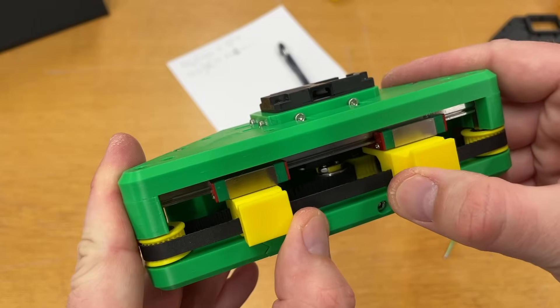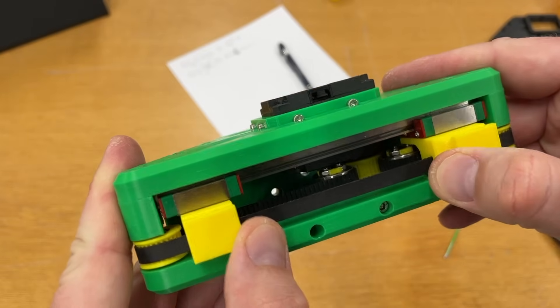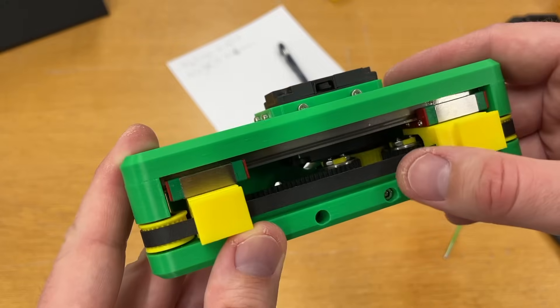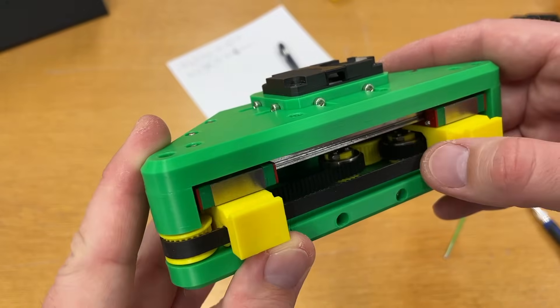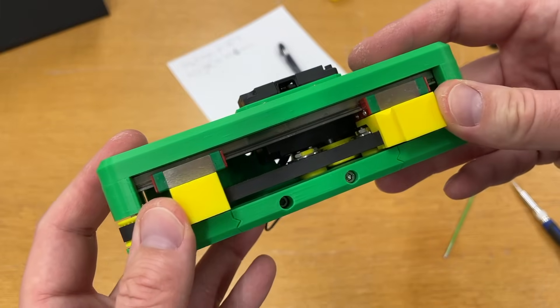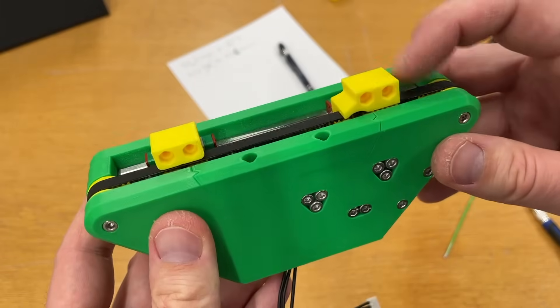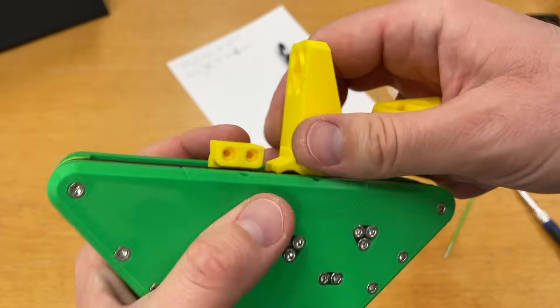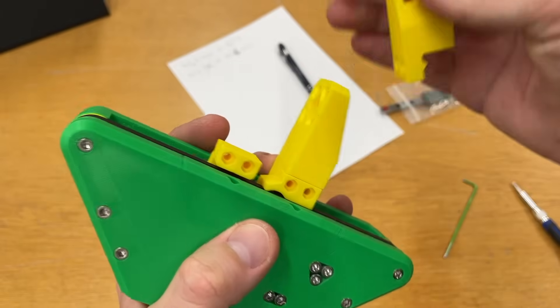So you see how the belt goes over there over the motor pulley, the second pulley. Afterwards the top part of the belt is fixed to this finger and the bottom part of the belt fixed to this finger. The rest of the fingers is these parts. But for these parts I have some plan.